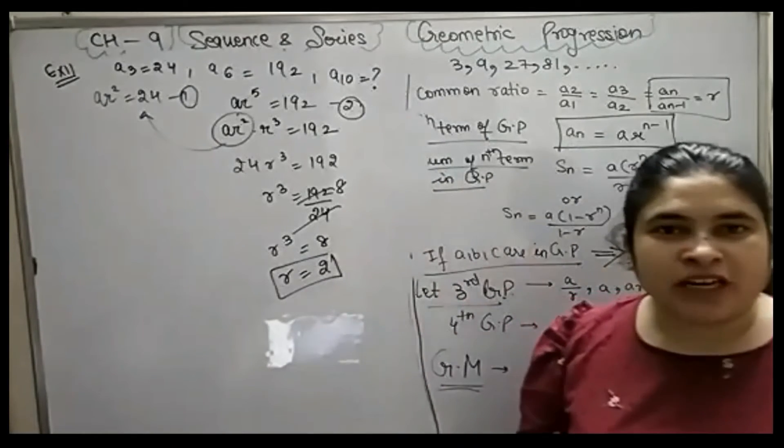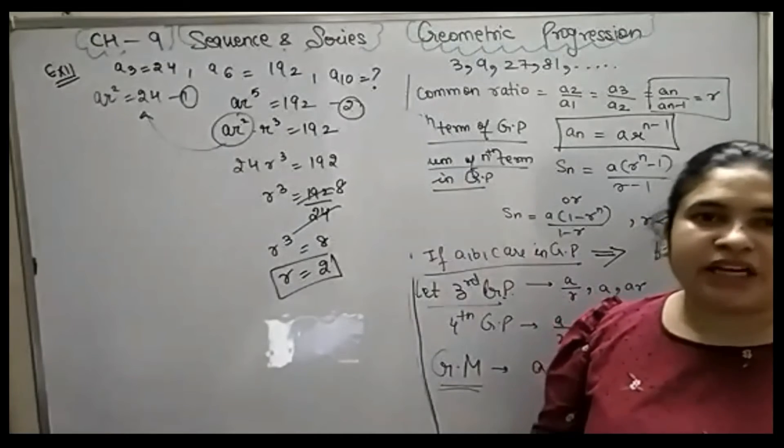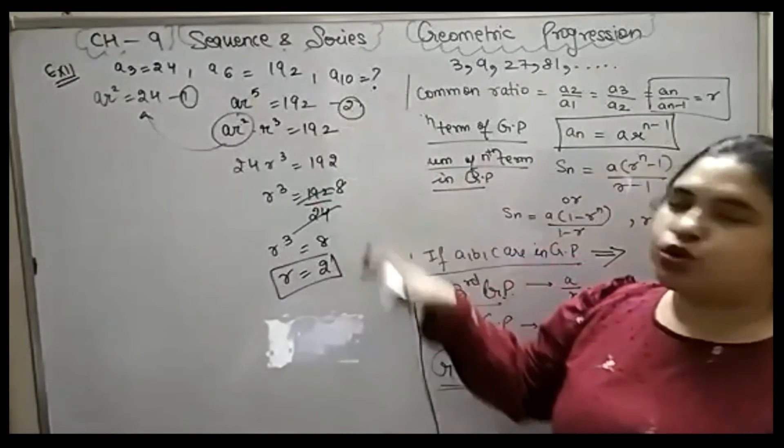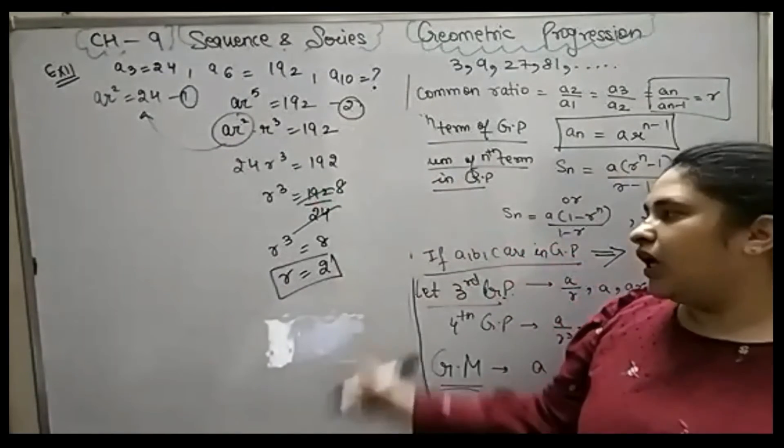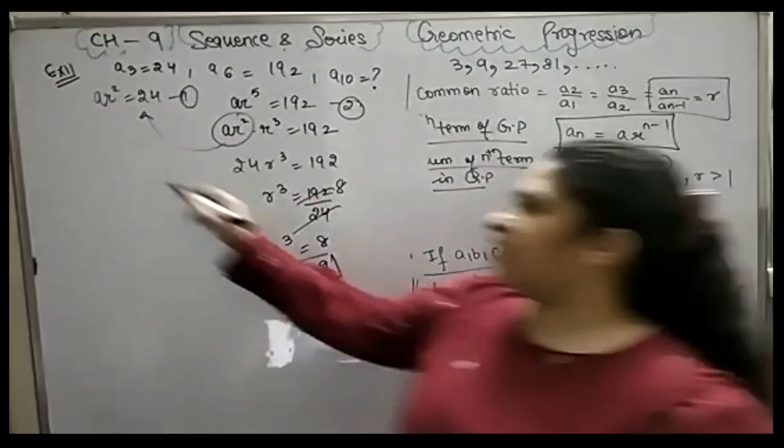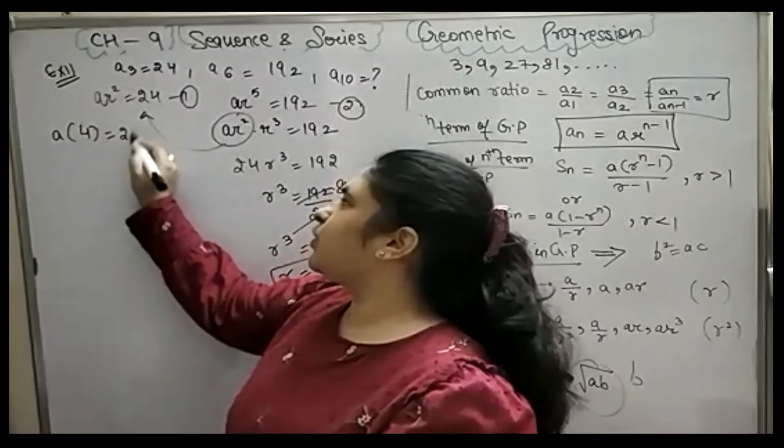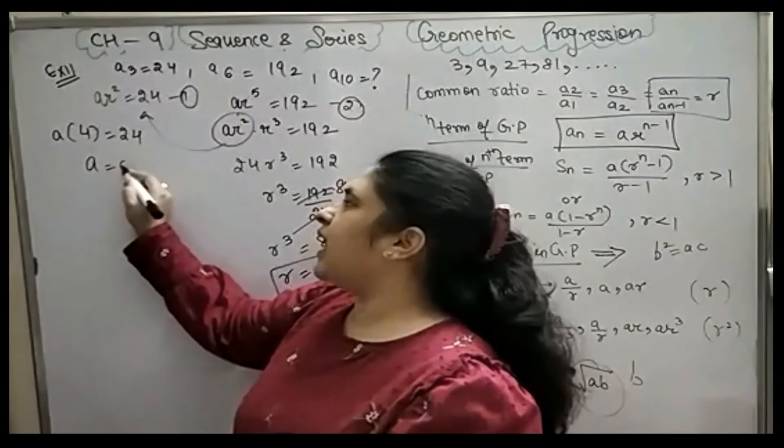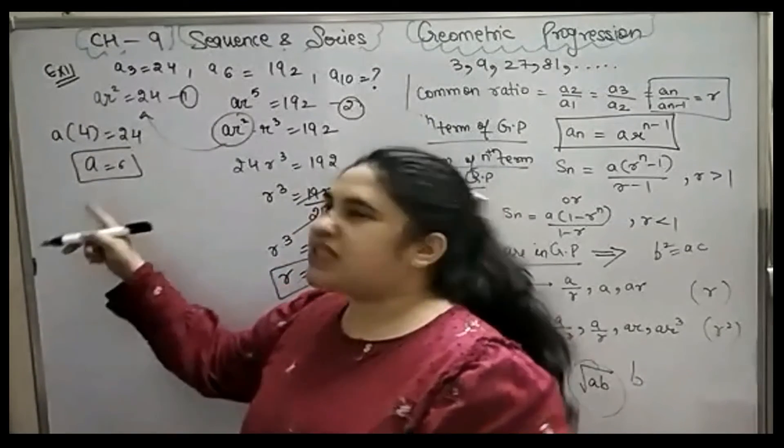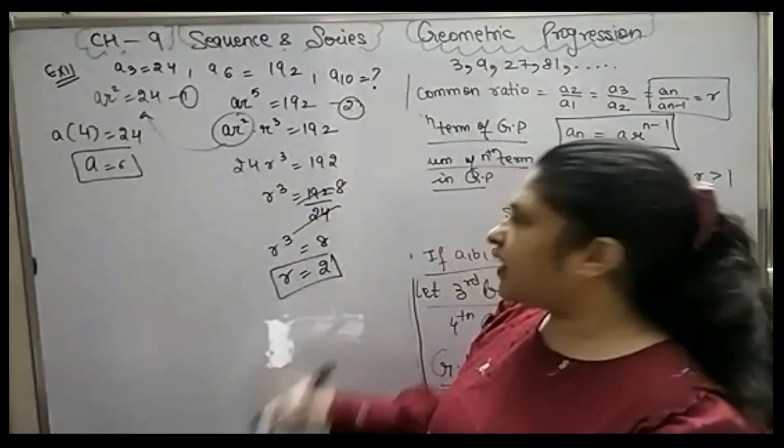You can divide it and put the value in one equation. Now if you have R, what will be A's value? I will put it here. A times 4 is equal to 24. How much is A? 6. Now I have A's value and I have R's value.